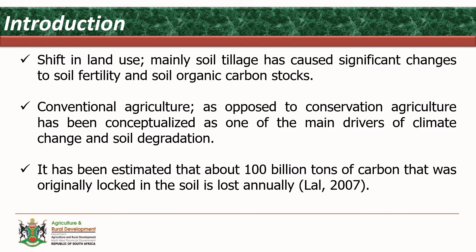When heavy rainfall comes, after the action of the mouldboard and the disk plows, our soils are washed down the streams or rivers, causing more silting up of the river bodies or the river ecosystems. It has been estimated that about 100 billion tons of carbon that was originally stored in the soil is lost annually — that is by LAR in 2007.